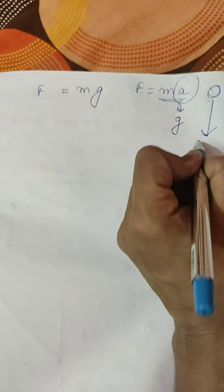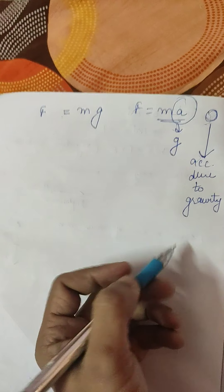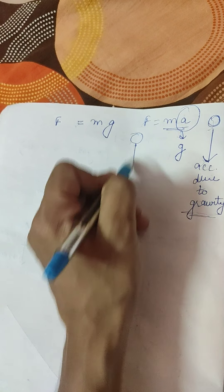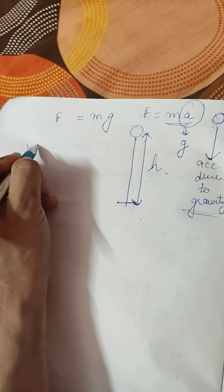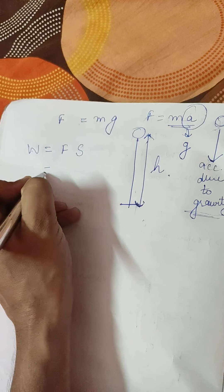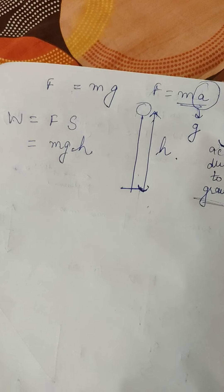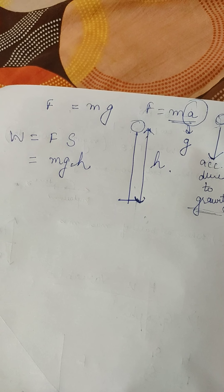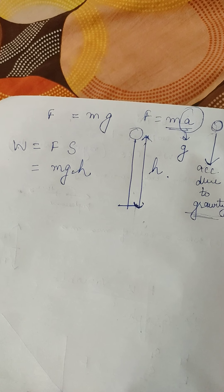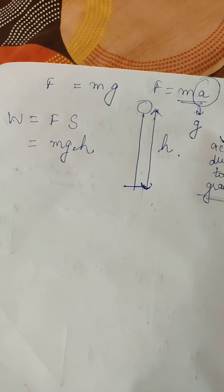A body falling downwards is accelerating due to gravity. The distance it covers is the height H. Work done = F × S, and here that gives us W = MGH. So the work done by the force of gravity is MGH — the same whether the body comes down from a height using stairs or an elevator, because the force and height are both the same.